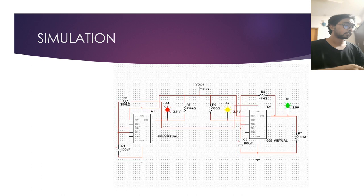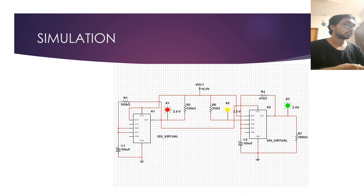In simulation, experiments are carried out with the model without disturbing the real system. Policy decisions can be made much faster by knowing the options in advance and by avoiding the risks of experimenting in the real system. A disadvantage is that simulation does not generate optimal solutions, it may take a long time to develop a good simulation model, and in certain cases the simulation model can be very expensive.